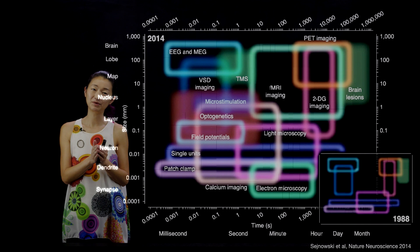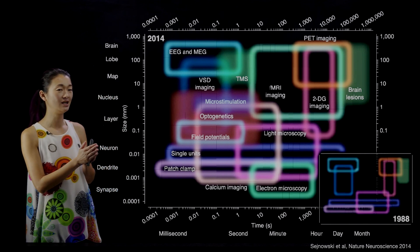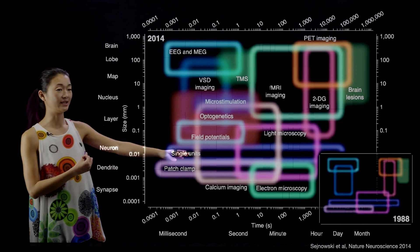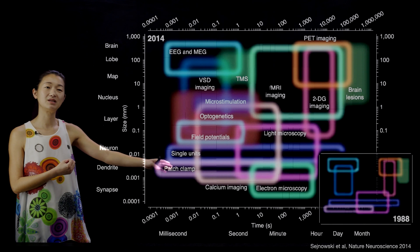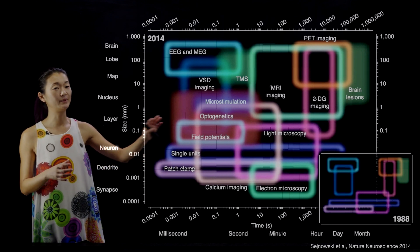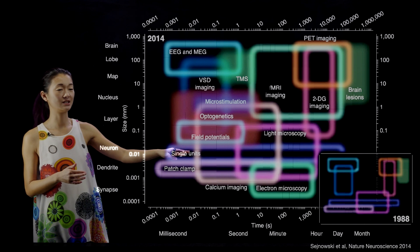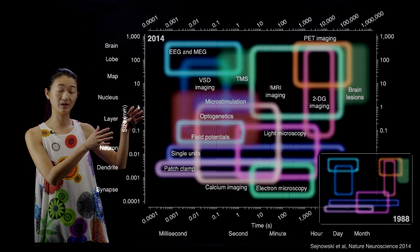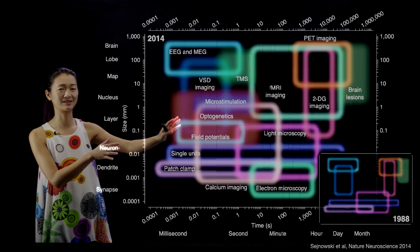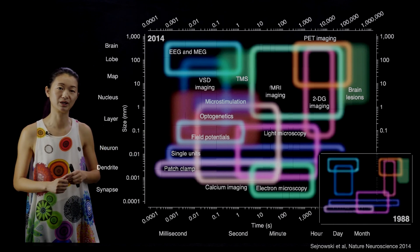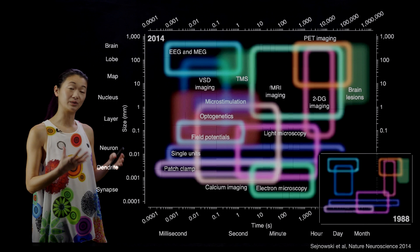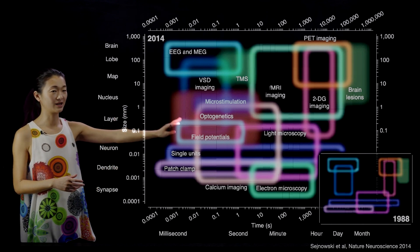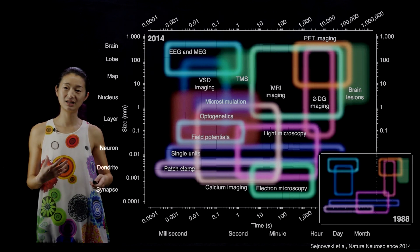They wrote this paper in 2014 and compared the state of the art in 2014 to what it was in 1988. Even without paying attention to all the details, you can see that our ability to manipulate and record from neural activity in 1988 was substantially more restricted than in 2014. You can imagine this diagram being even more filled in if we made a version for 2023 — and that is a wonderful thing. Terry and colleagues focused mostly on spatial-temporal techniques for monitoring brain activity.